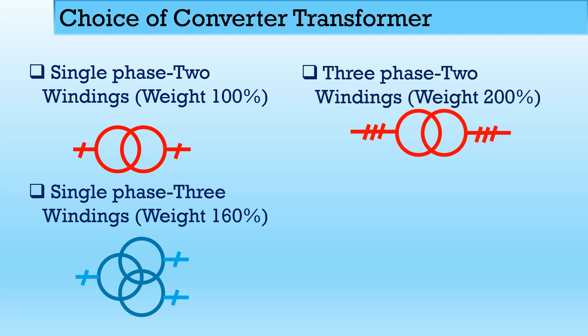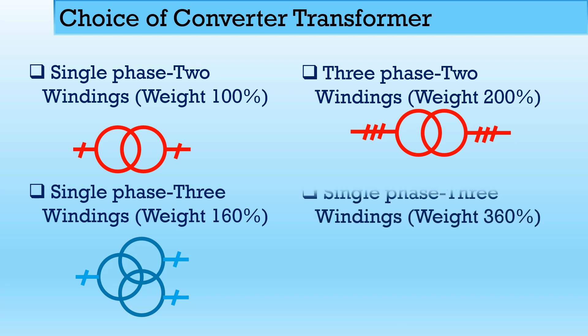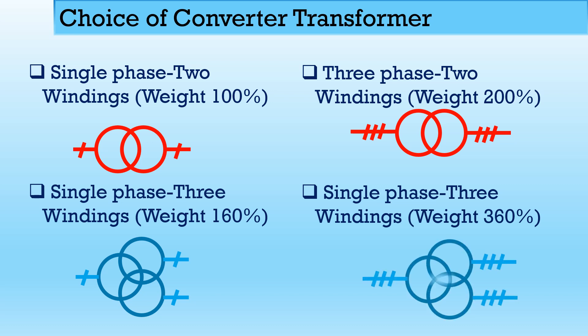The third option is a three-phase two-winding transformer, but its weight will be 200%. In the previous case (single-phase three-winding), the weight is 160% compared to the first case. The fourth option is a three-phase three-winding transformer; taking a single unit, its weight is 360%. It is observed that using the single-phase three-winding transformer at 160% weight is the preferred solution. For a 12-pulse system, you would require six such transformers, whereas twelve transformers would be needed with two-winding units.